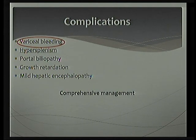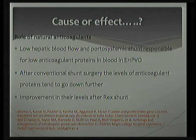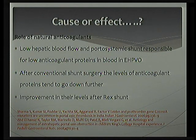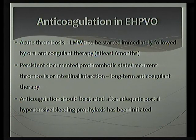I would like to highlight upon thrombophilic states as a causative factor for portal vein thrombosis, especially in pediatrics. Initially it was stated that thrombophilic states in children are known causative factors for portal vein thrombosis, but recent theories have refuted this. Studies show it is mainly low hepatic blood flow responsible for low anticoagulant protein synthesis by the liver, especially in children with EHPVO. After conventional shunt surgery, anticoagulant protein levels tend to go down further as you divert blood away from the liver, whereas these levels improve following a rex shunt.